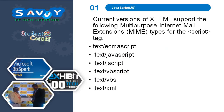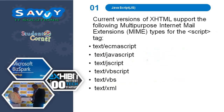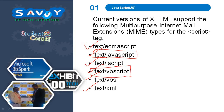Current versions of XHTML support the following MIME types for the script tag: text/ECMAScript, text/JavaScript, text/VBScript, text/VBS, and text/XML. These are different types of formats. Mostly we are using the second one for writing JavaScript. If you want to implement VBScript, we need to use that type. The syntaxes and application orientations are almost all the same, but some additional features are available individually.